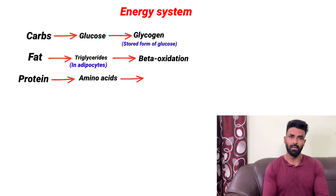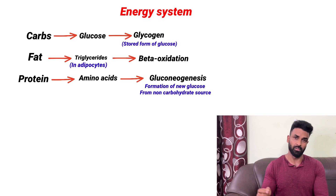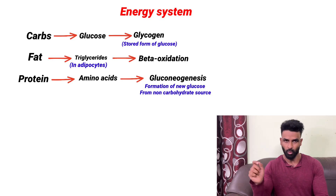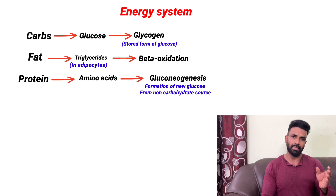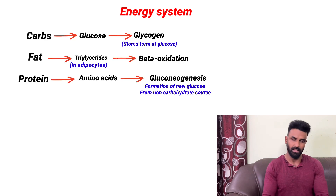When proteins break down, amino acids can be used in a process called gluconeogenesis. Gluconeogenesis means: gluco = glucose, neo = new, genesis = formation. So it is the formation of new glucose from a non-carbohydrate source. This is a basic physiological term that is helpful to know.